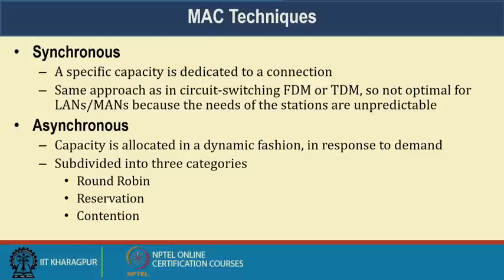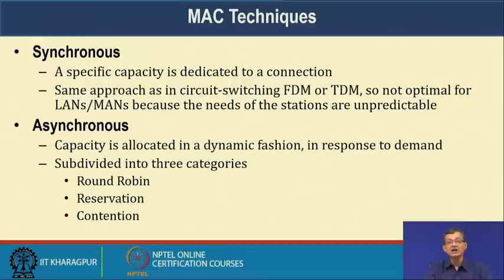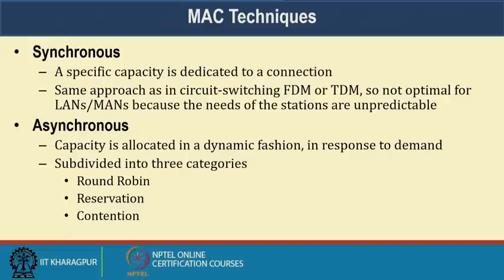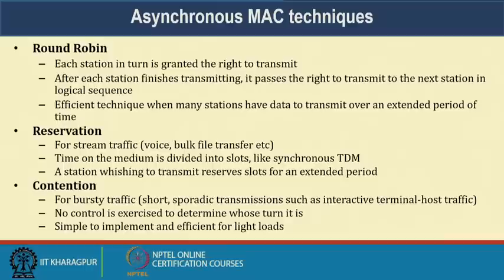MAC techniques can be synchronous — where a specific capacity is dedicated to a connection, using FDM (frequency domain multiplexing) or TDM (time domain multiplexing) — but this is not optimal for LAN or metropolitan area networks because station demand is unpredictable. Alternatively, asynchronous techniques allocate capacity dynamically in response to demand, and can be subdivided into three approaches: round robin, reservation, and contention.